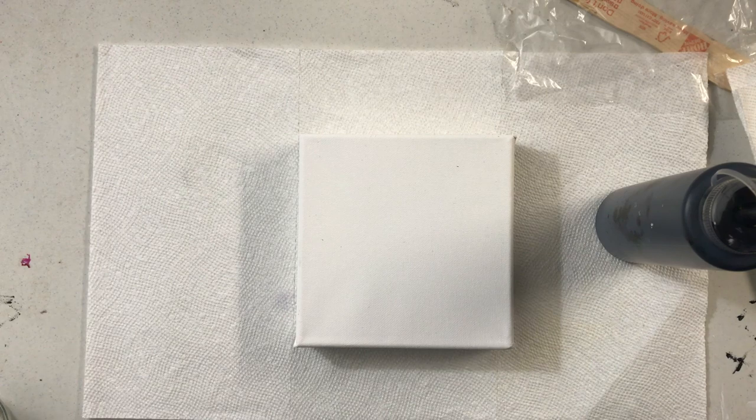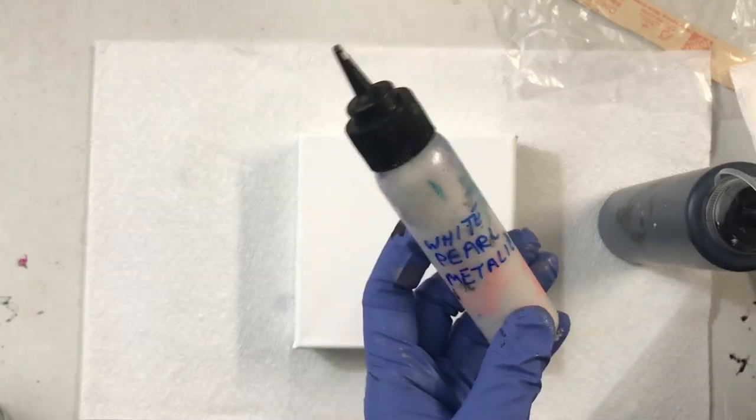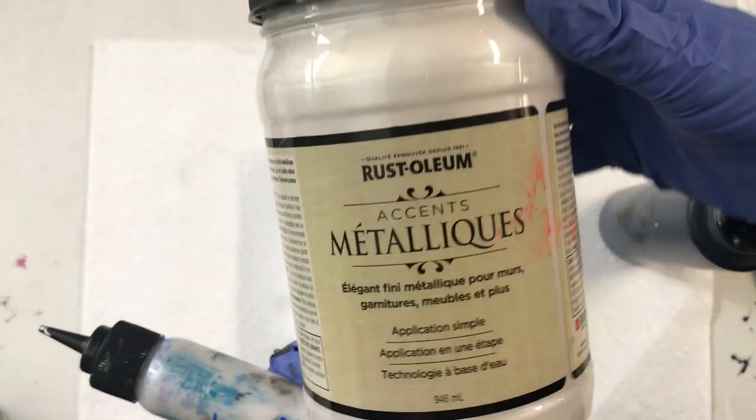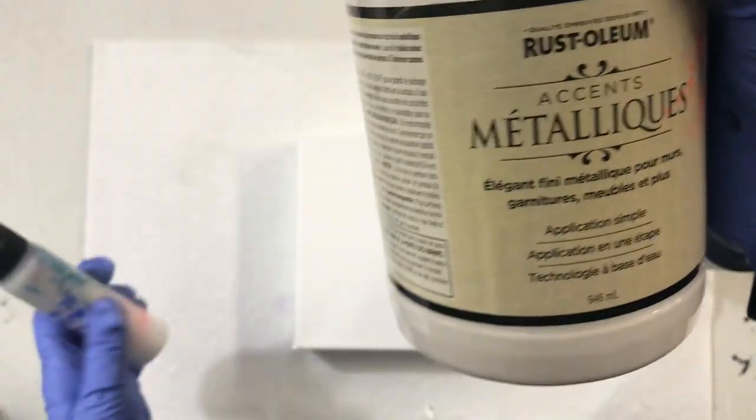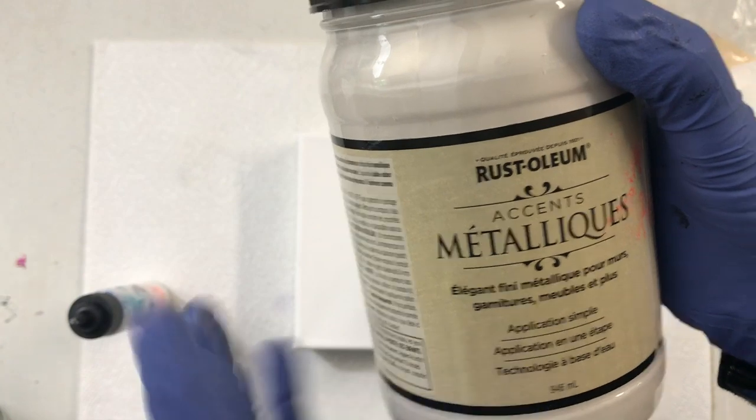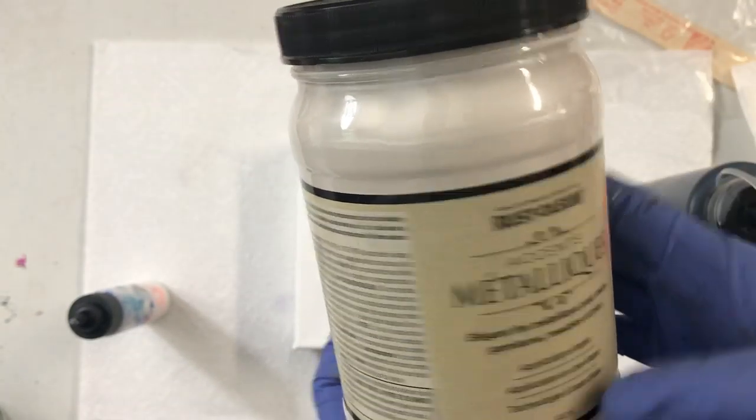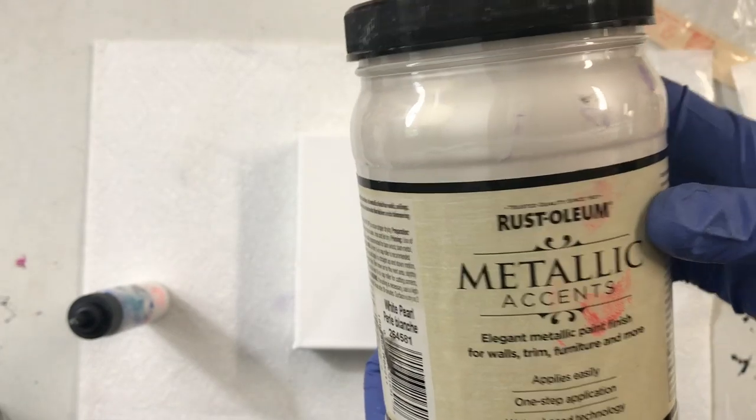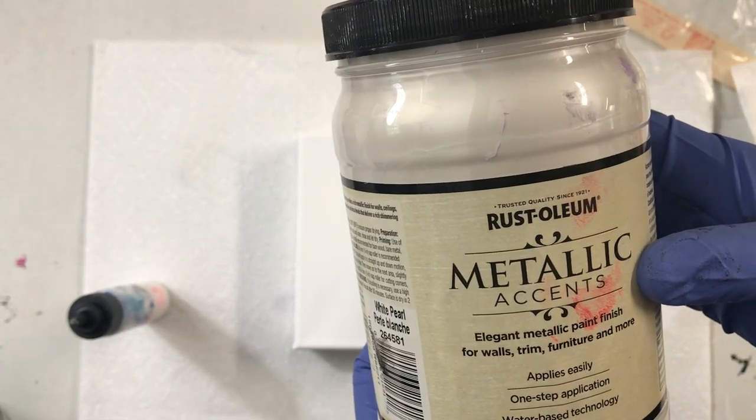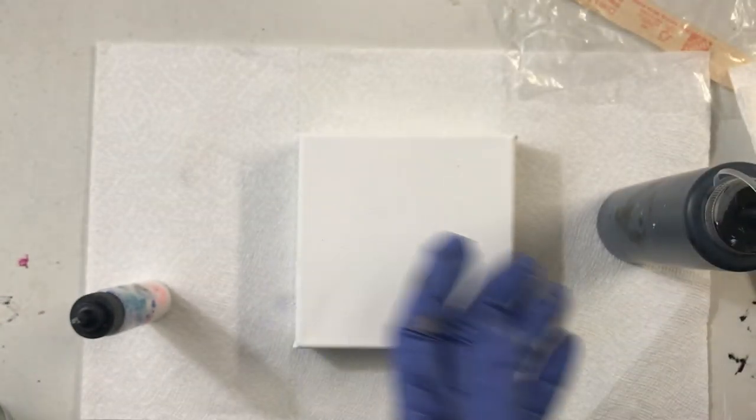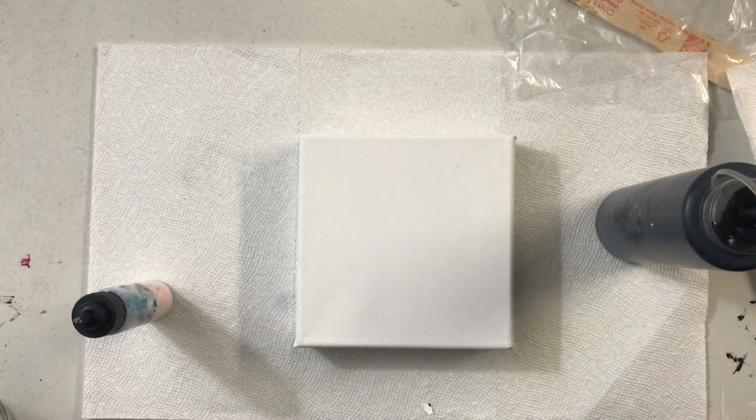I have white pearl metallic in this little bottle. This is what it is: Rust-Oleum Accent Metallics, and it's water-based. It's for walls, trim, furniture, and more. So I've used it before and it works great. I've also got gold.